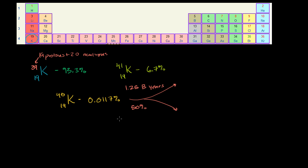50% of any given sample will have decayed, and 11% will have decayed into argon-40. Argon is right over here on the periodic table — it has 18 protons. When you think about potassium-40 decaying into argon-40, it lost a proton but has the same mass number, so one of the protons must have turned into a neutron. It actually captures one of the inner electrons and emits other things. The other 89% turns into calcium-40.